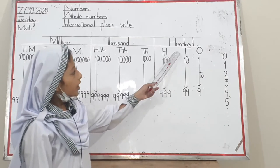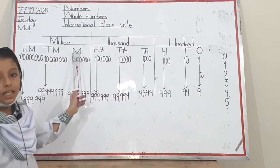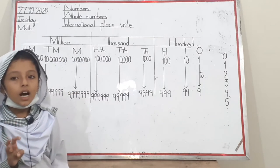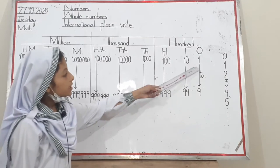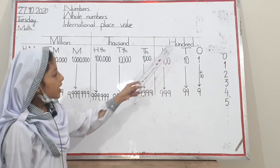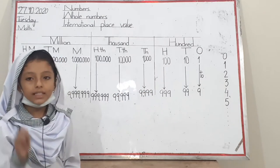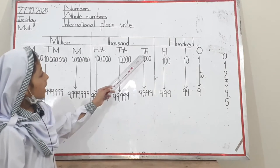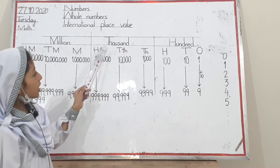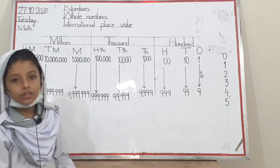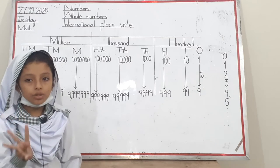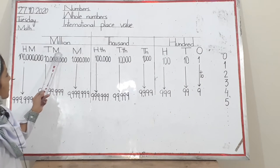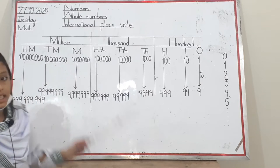The hundred family has three members: ones, tens, and hundreds. The thousand family also has three members: thousand, ten thousand, and hundred thousand. The million family also has three members: million, ten million, and hundred million.